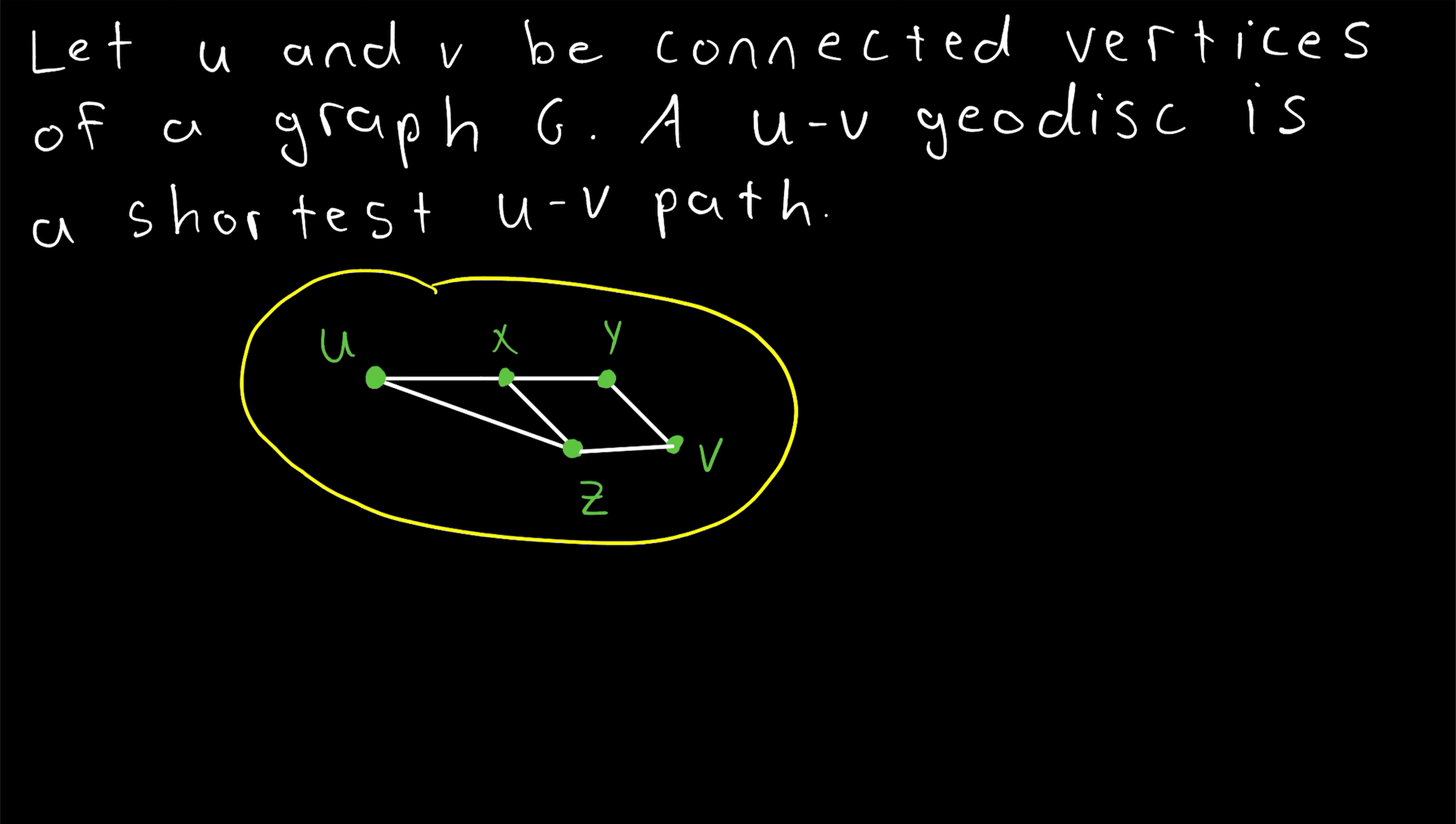For example, looking at this graph down here, what is the distance between u and v, which remember is written like this? What's that equal to? By definition, the distance between two connected vertices is the length of a shortest path connecting them.